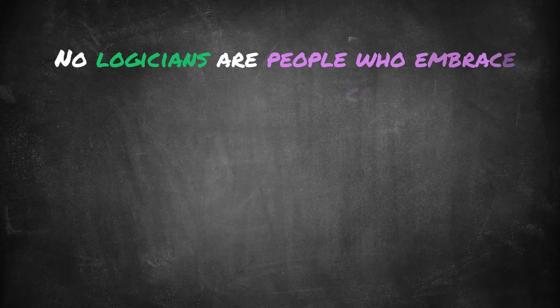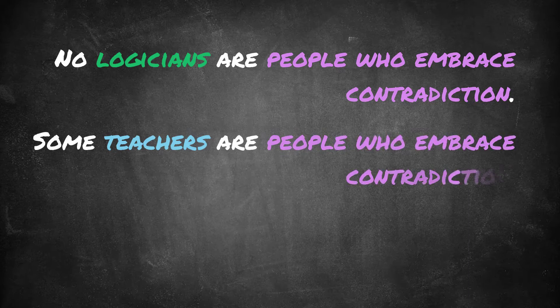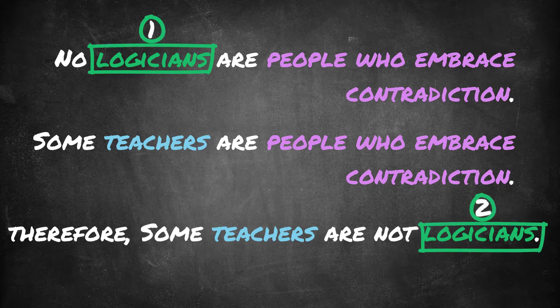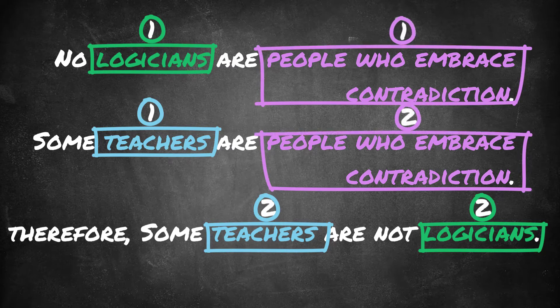Premise one: no logicians are people who embrace contradiction. Premise two: some teachers are people who embrace contradiction. And our conclusion: therefore, some teachers are not logicians. Logicians appears twice — in premise one and in the conclusion. Teachers appears twice — in premise two and the conclusion. And people who embrace contradiction also appears twice, once in each premise.